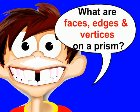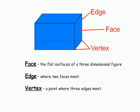So what are faces, edges, and vertices on a prism? Let's look at the definitions. A face is the flat surfaces of a three-dimensional figure — this rectangular prism has six faces. The edges are where the faces meet. And the vertex, or vertices, are where three edges meet.